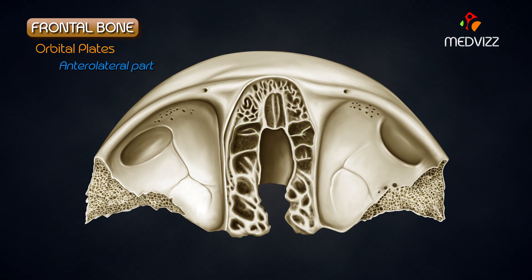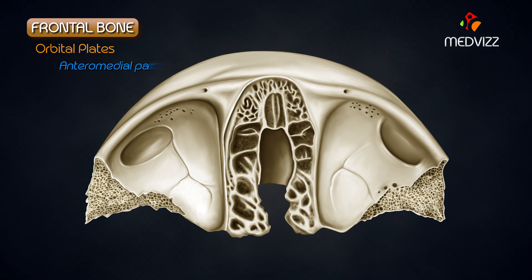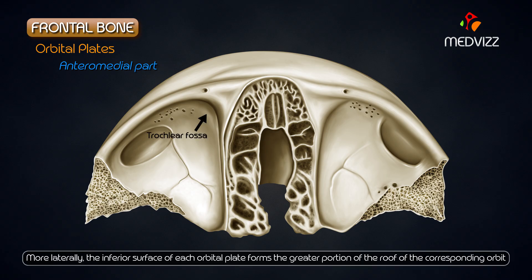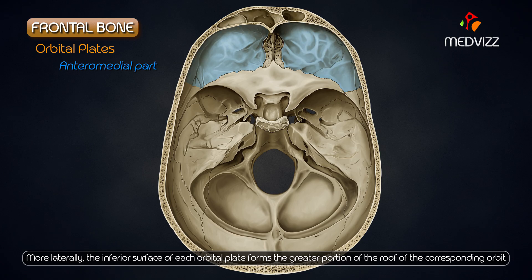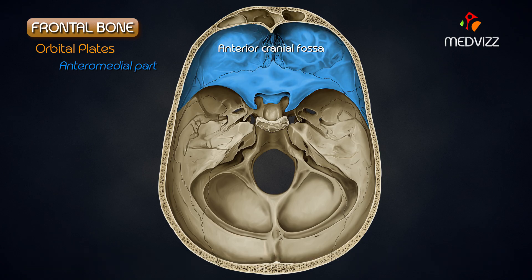The anterolateral part of the roof presents with a shallow depression, the lacrimal fossa, for the lacrimal gland. The anteromedial part of the roof bears a small depression, the trochlear fossa. The superior surface of the orbital plate forms the greater part of the floor of the anterior cranial fossa.